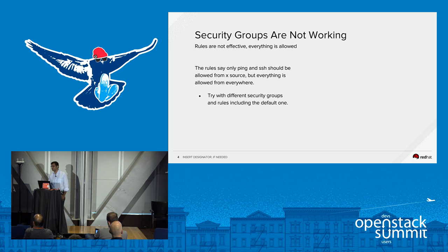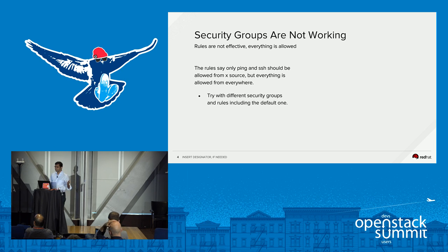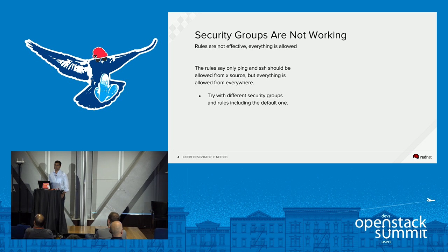The first step was to understand whether it was a problem in the way I created the security groups. I tried deleting the security groups, creating a new security group, and attaching it to the instance. I even tried attaching the default security group, where everything should be blocked. There was no luck — whatever I did, everything to the instance was allowed. I could ping, SSH, and if I brought up an HTTP server, I could access port 80 of the instance. The problem was to understand why every rule was working even when the security group was defined properly.